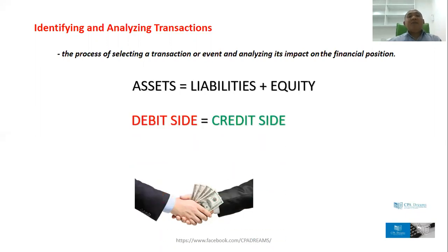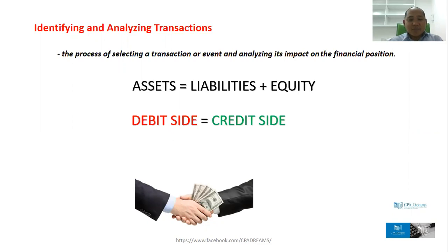Then I'm going to remind you: if it's on the asset side, it will involve the debit and the credit. Also, in the liabilities and equity, you have the debit and the credit. I'm going to give you some examples of this debit and credit later. At the moment, we just need to understand how the assets increase — is it debit or is it credit? How the liabilities decrease — is it debit or credit? So that is the main focus of this discussion.